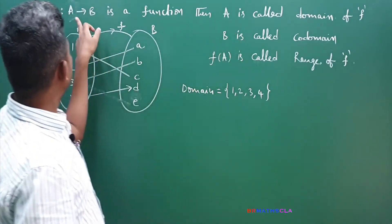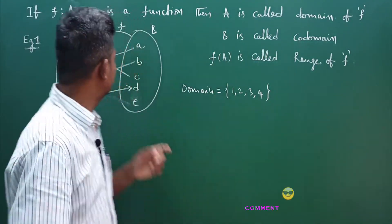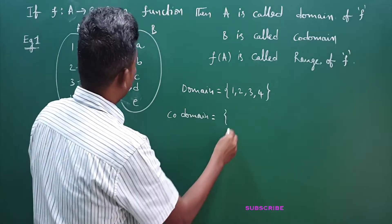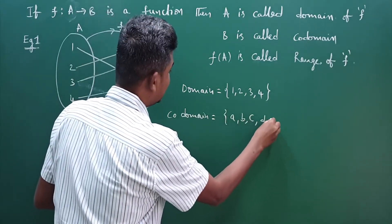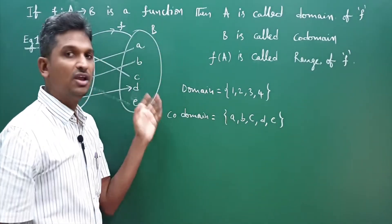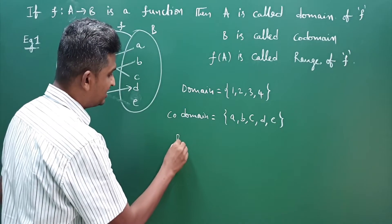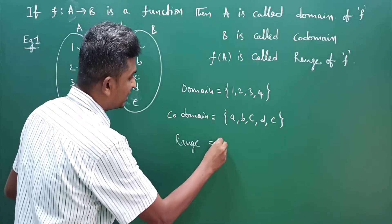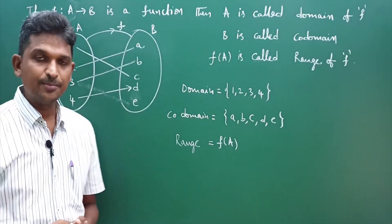Now, codomain: if f from A to B is a function, then B is called codomain. What is codomain here? It is set B — {a, b, c, d, e}. Set B is called codomain. And what is range? Range is nothing but f of A — the set of all images of set A.